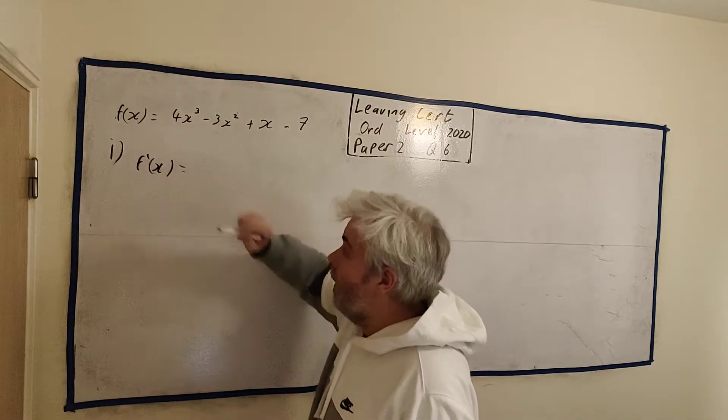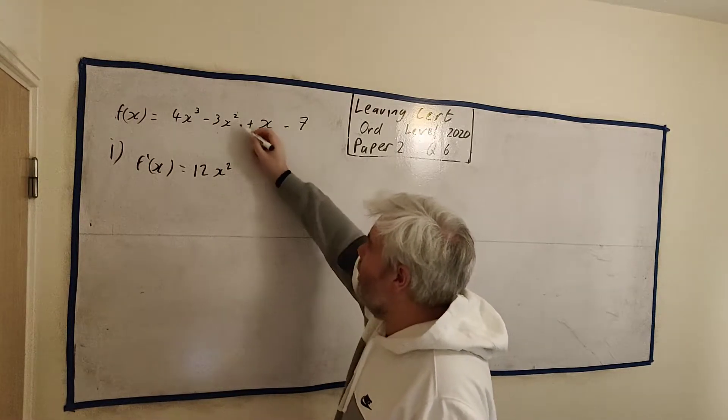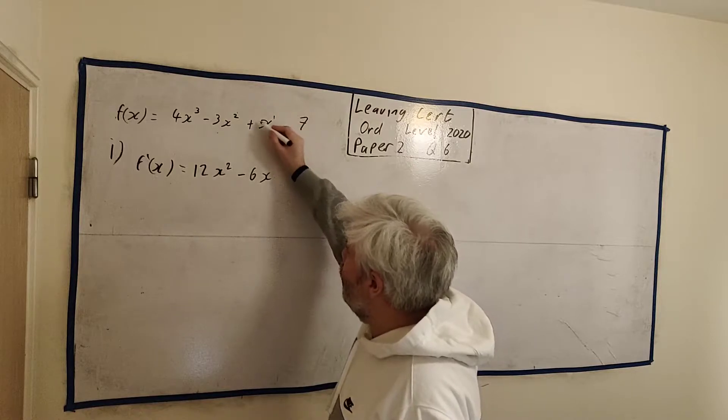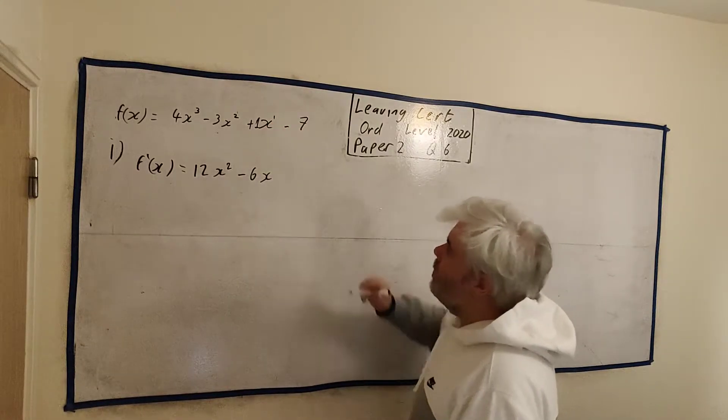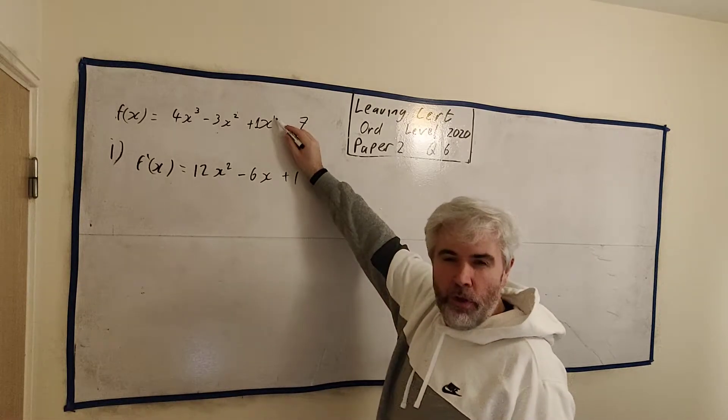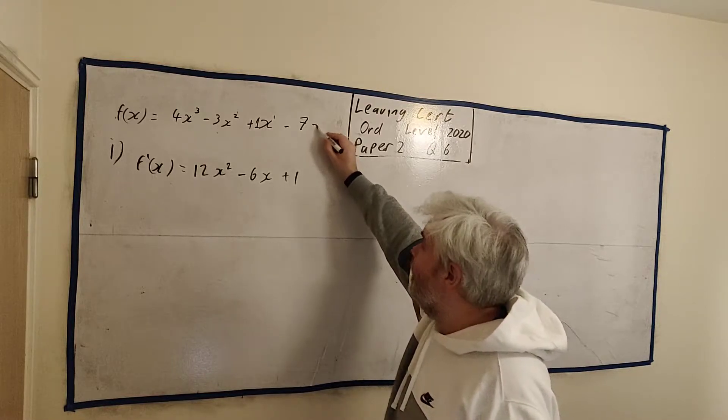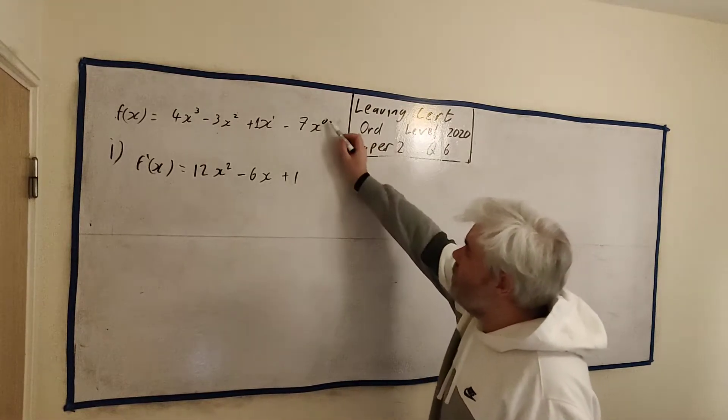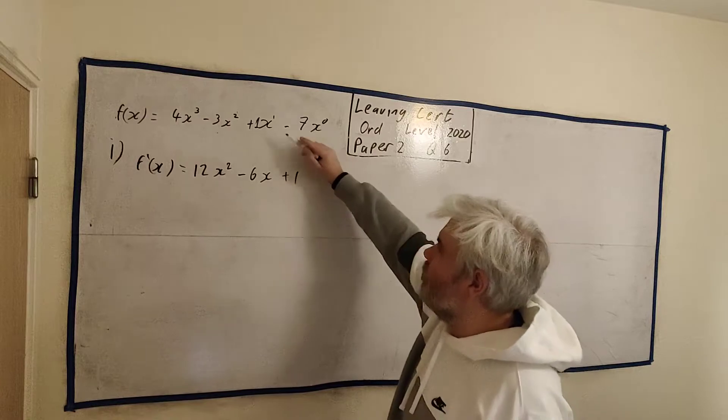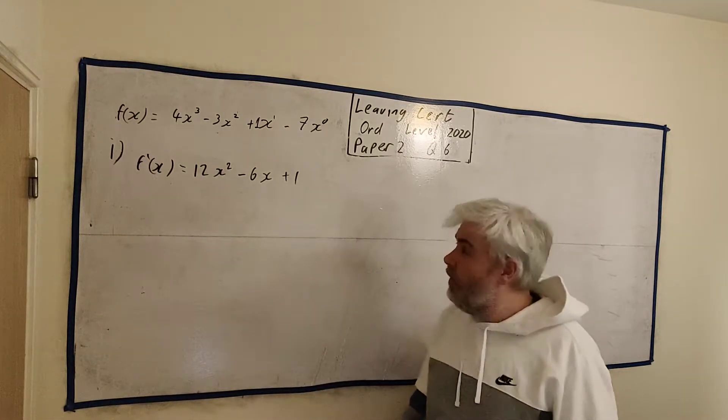So how do we differentiate? We have a rule for this. I'm going to hope most of you are able to do it by now. We take this number and multiply it by this number, so we get 12x, and we take 1 away from this number. And we continue that on down. We get minus 6x. There's a 1 up here, and there's a 1 in front of every number. So that's 1 times 1, and x to the power of 0 is 1. This last one that has no x has an x to the power of 0. So it's 0 multiplied by 7, that's 0. So we get f'(x) = 12x² - 6x + 1.